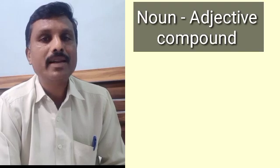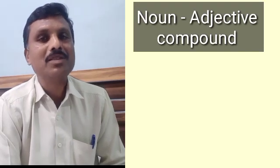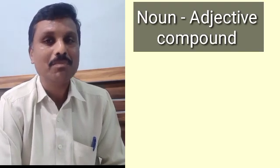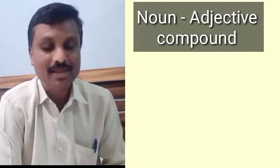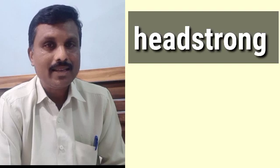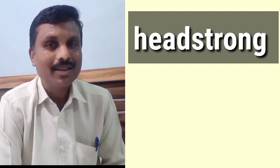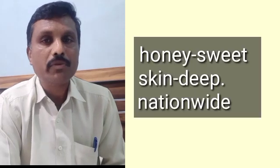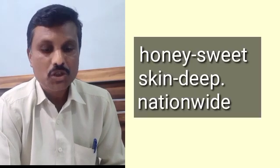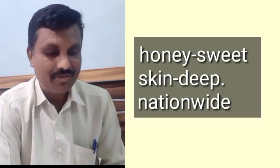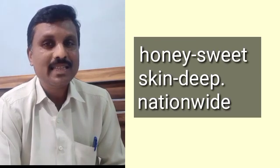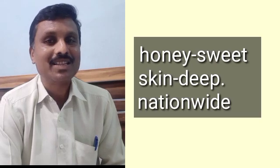The third type is the noun-adjective compound, when a noun combines with an adjective. For example, 'head' is a noun and 'strong' is an adjective — headstrong. 'Honey' is a noun and 'sweet' is an adjective. 'Skin' is a noun and 'deep' is an adjective. 'Nation' is a noun and 'wide' is an adjective. All these are noun-adjective compounds.